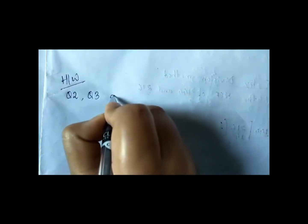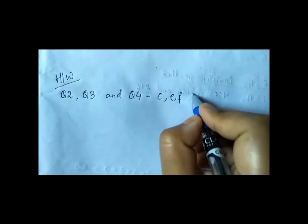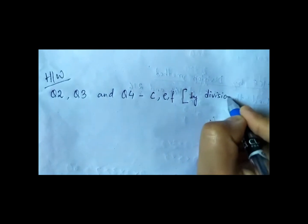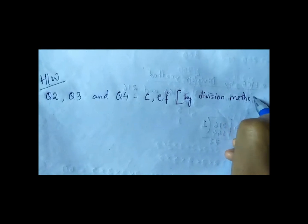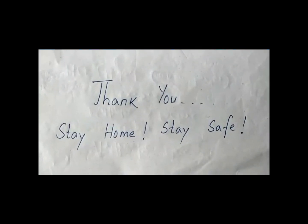I believe you have all understood how to find HCF by division and prime factorization method. Now I will give you some homework — try to solve it by yourself: question number 2, question number 3, and question number 4, only c, e, and f. Question number 4, solve by division method. Thank you, stay home, stay safe.